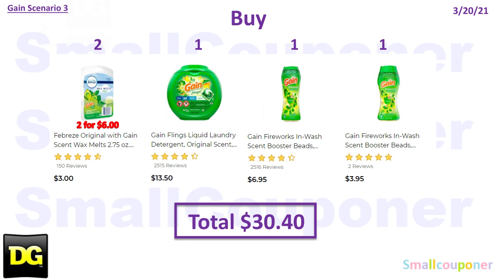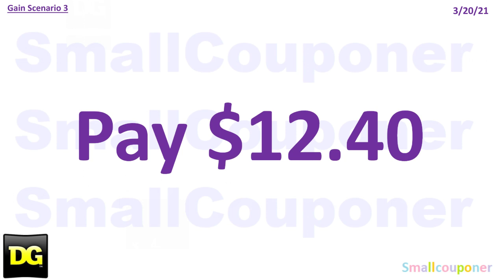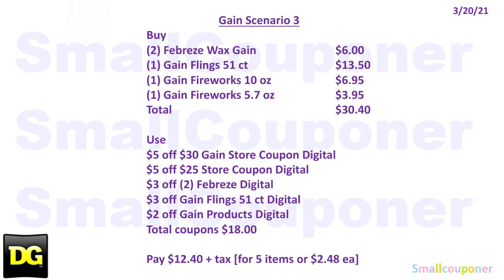Scenario 3: You'll buy 2 of the Febreze Wax Melts — Gain-scented — for $3 each, so 2 of them will be $6. 1 of the Gain flings, 51-count, for $13.50. 1 of the Gain fireworks, 10 ounces, for $6.95. And 1 of the Gain fireworks, 5.7 ounces, for $3.95. Total comes to $30.40. You will use the $5 off $30 Gain-scented purchase store coupon, the $5 off $25 for this Saturday March 20th, $3 off 2 Febreze, $3 off Gain flings 51-count, and $2 off Gain products for the larger sizes. Your total coupons is $18. You'll pay $12.40. Here is the written breakdown, so I'll give you a couple seconds to take a screenshot of this.